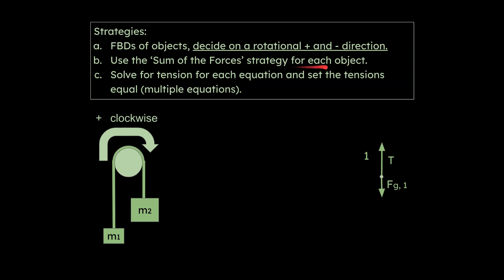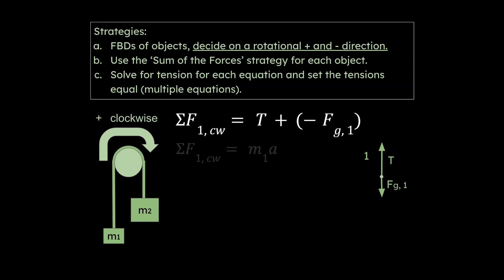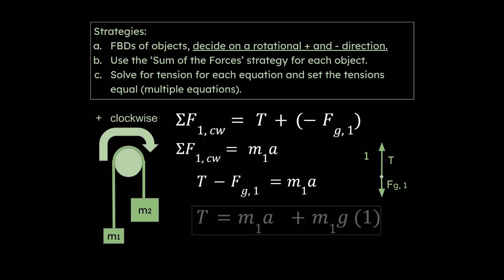Using the sum of the forces strategy for object one: tension is treated as positive because it causes clockwise motion, and FG1 is treated as negative because it would cause counterclockwise acceleration. The second line is mass times acceleration — Newton's second law. Setting those two lines equal gives us: tension minus the force due to gravity on the first object equals M1 times acceleration. Solving for tension from the first object's equation gives us tension in terms of those variables.